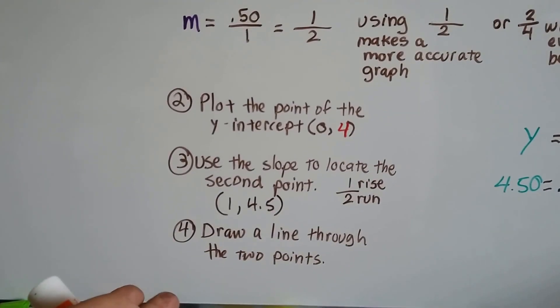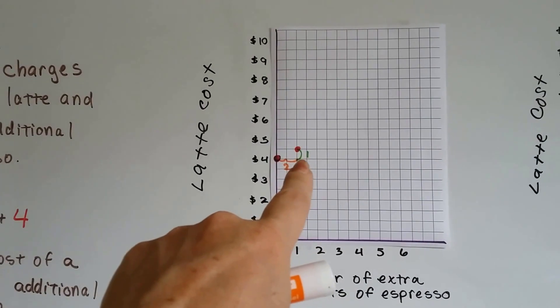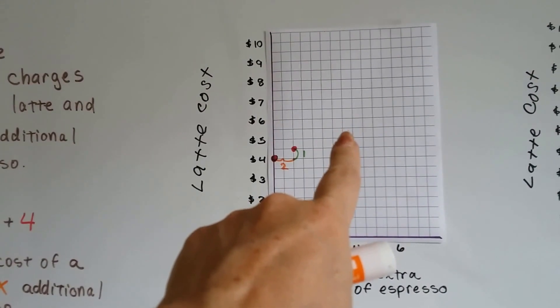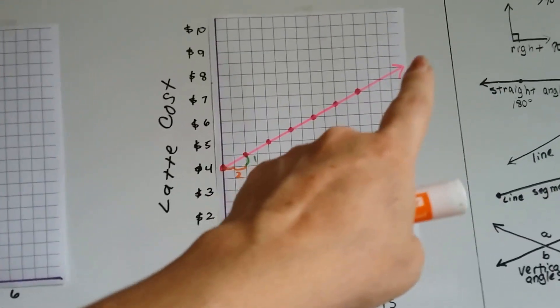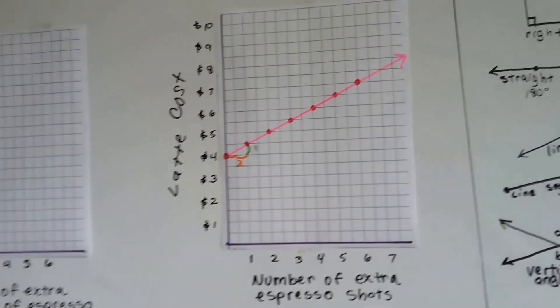Now all we have to do is draw a line through those two points. We could do another rise and run of 1 over 2 and find the next point, and another rise and run to find the next point. We can plot all the points and then draw a line through them, and we'd get this nice positive slope.